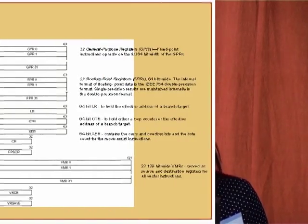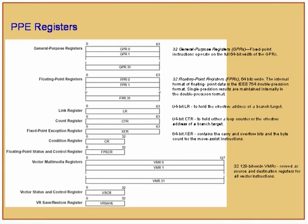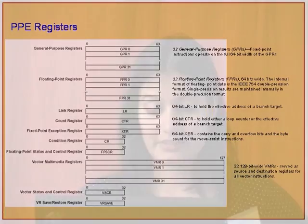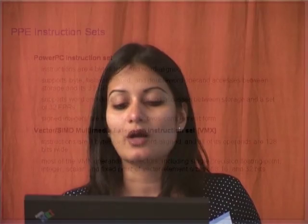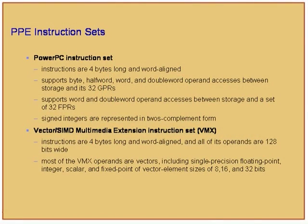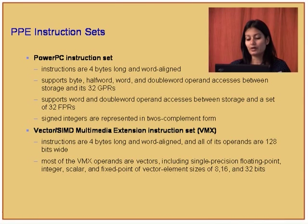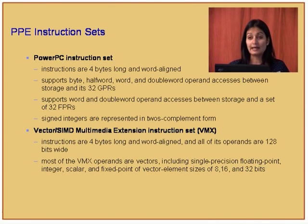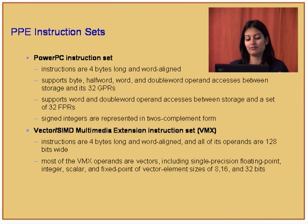These are the registers on the PPE. There are different registers to handle floating-point computations versus fixed point, a condition register, typical register format similar to Intel architecture. The PowerPC instruction set has all instructions at four bytes long, aligned on word boundaries. It supports byte, half-word, word, and double-word accesses to all general-purpose registers, and word and double-word operand accesses between storage and floating-point registers. Signed integers are always represented in two's complement form, and there is an extensive vector or multimedia instruction set. Vector code can be written on the PPU as well.